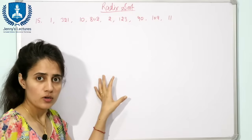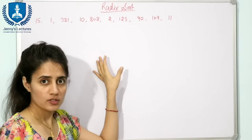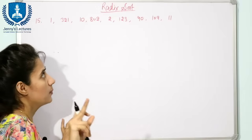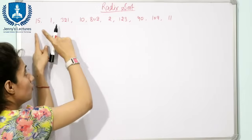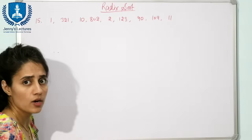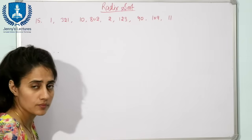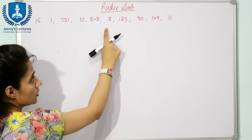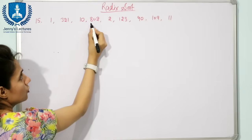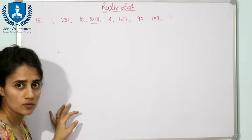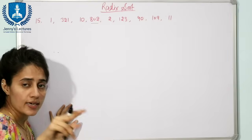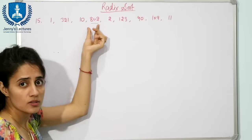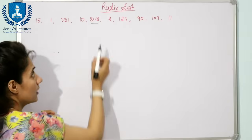We are also going to see what the time complexity for Radix Sort is. The first step in this sorting algorithm is: out of the given numbers, find out the maximum number. By looking at these numbers we can see the maximum number is 802.